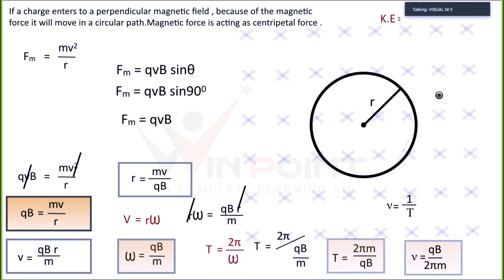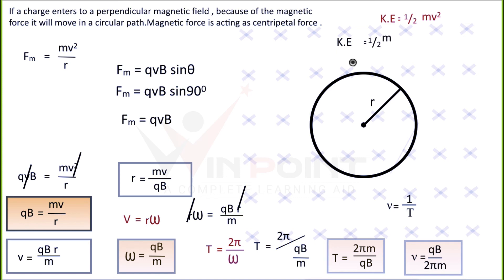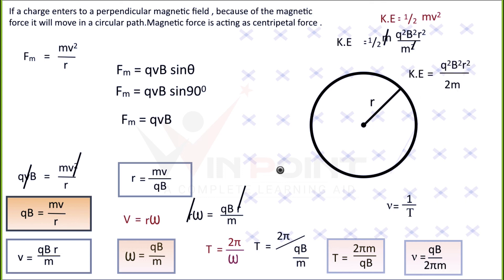Kinetic energy equals ½Mv². Substituting V = QBR/M: kinetic energy = ½ × M × (Q²B²R²/M²). Cancelling M, the kinetic energy equals Q²B²R²/2M.